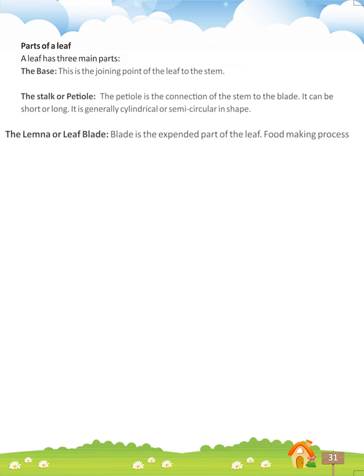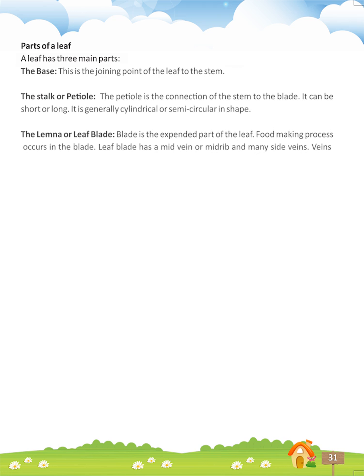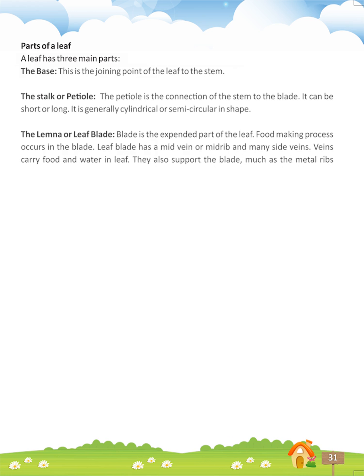The lamina or leaf blade. The blade is the expanded part of the leaf. The food-making process occurs in the blade. The leaf blade has the mid-vein or mid-rib and many side veins. Veins carry food and water in the leaf. They also support the blade, much as the metal ribs support the fabric of an umbrella.